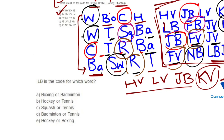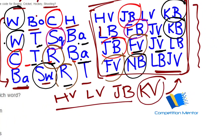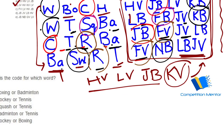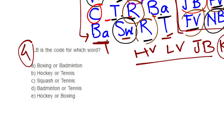Question number four: LB is the code for which word? LB and JB we couldn't individually resolve — they correspond to BA and T, that is Badminton and Tennis. That is option number D.